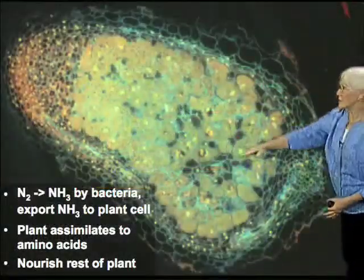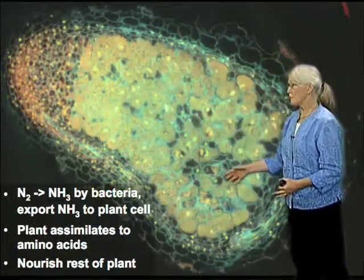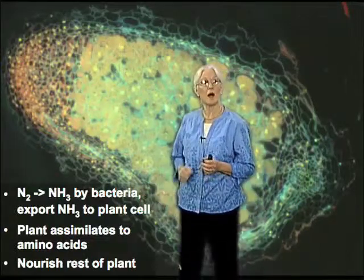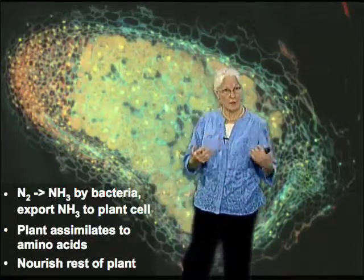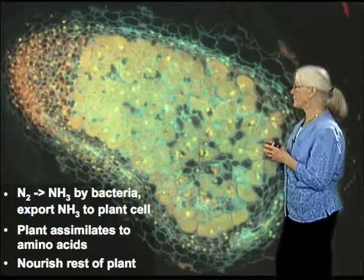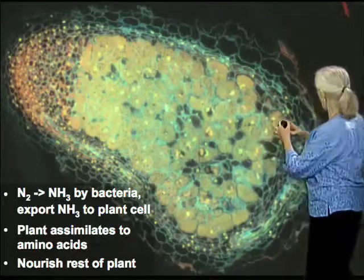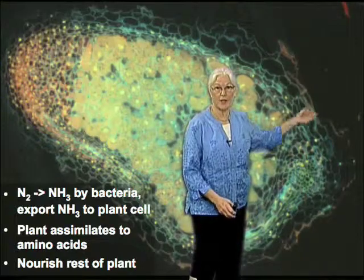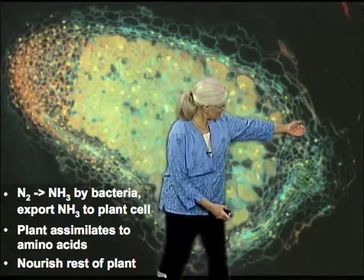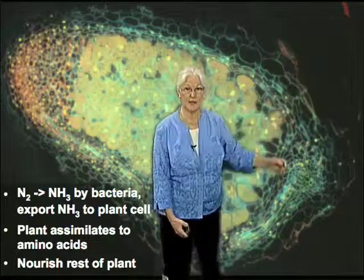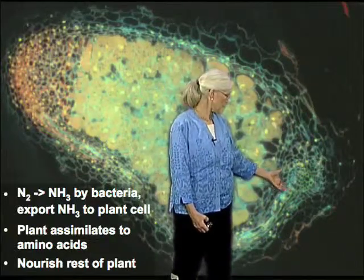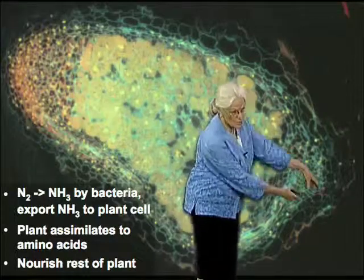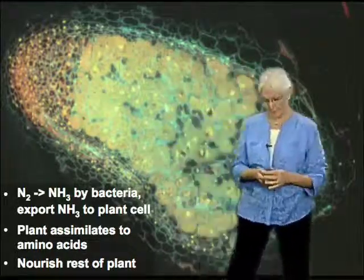We've got all of these cells, which are packed with bacteria fixing nitrogen. So inside these cells, we've got ammonia created from molecular nitrogen. And over here, you can see the vasculature of the plant. You can imagine that the stem of the root is going to go up like this, and the stele — the vascular tissue in the root — is going to transport all of those amino acids up to nourish the rest of the plant.